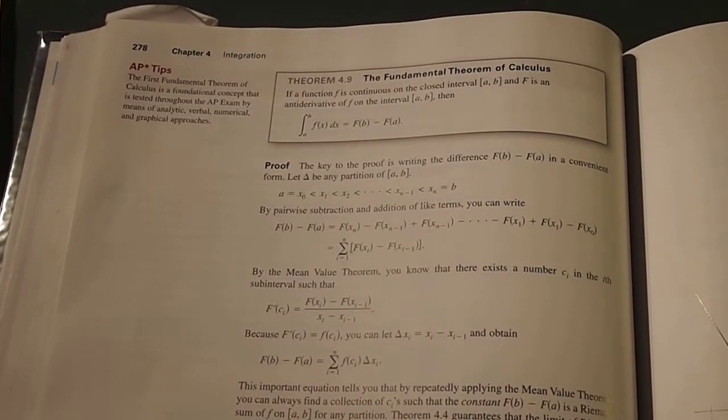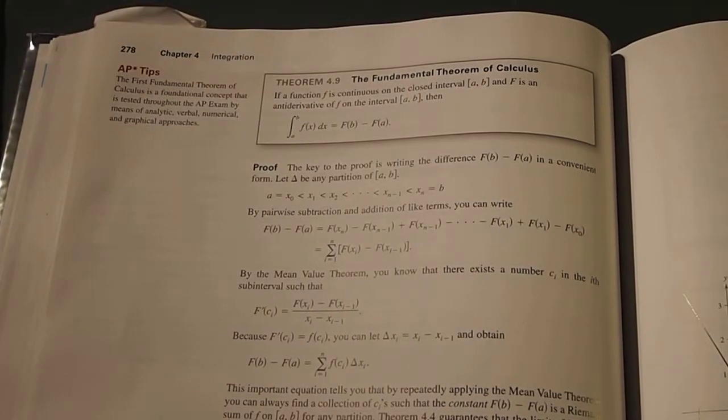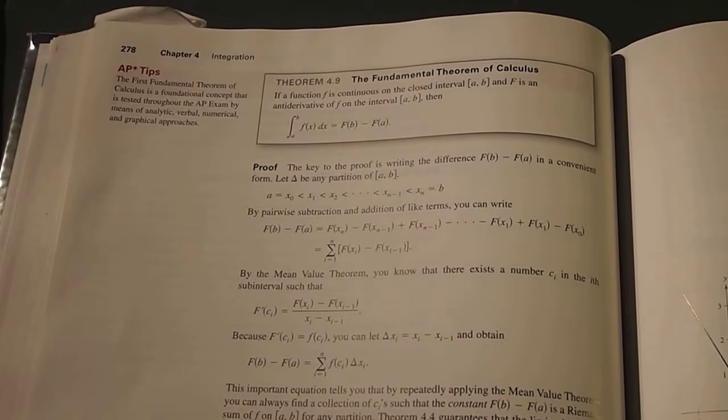Okay, so the fundamental theorem of calculus states that if a function f is continuous on the closed interval from a to b, and F is an anti-derivative of f on the interval from a to b, then the integral from a to b of f(x)dx is equal to the anti-derivative F(b) minus the anti-derivative F(a).